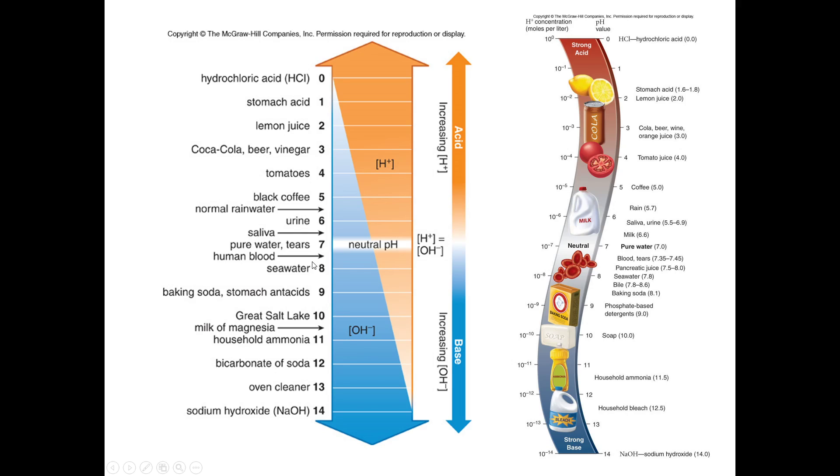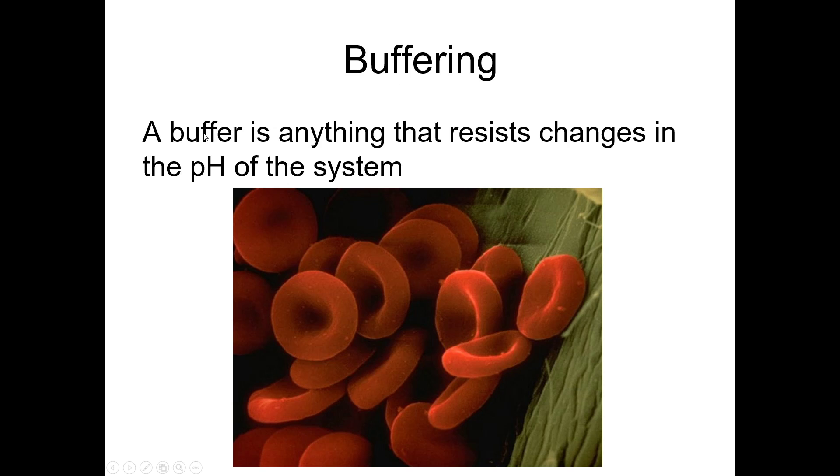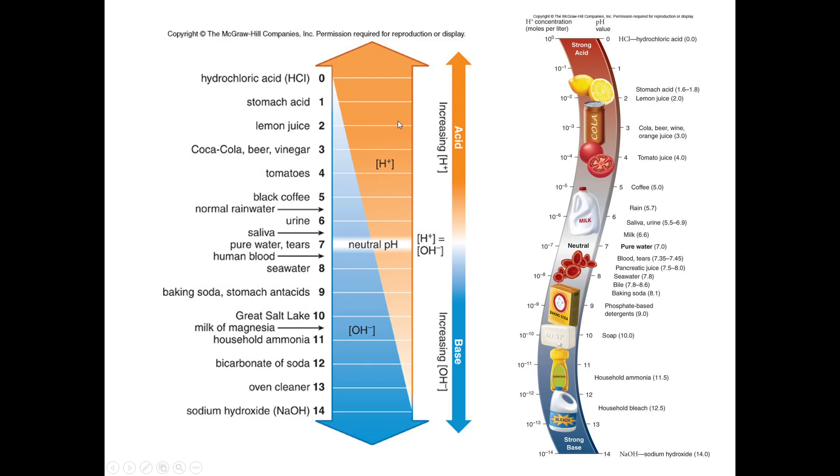It keeps it where it's supposed to be by resisting any change in the pH scale to keep it at that, you know, to keep it at a 1, to keep it at a 7.4, to keep it. So that's what a buffer is. So make sure you don't confuse a buffer with something that neutralizes. Buffers don't neutralize an acid or an alkaline and turn it to pH 7. That's the wrong answer.